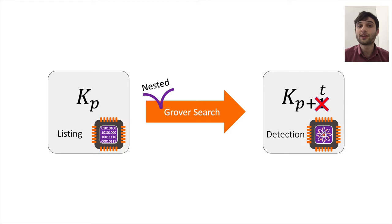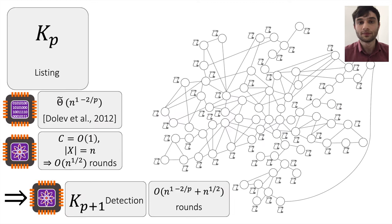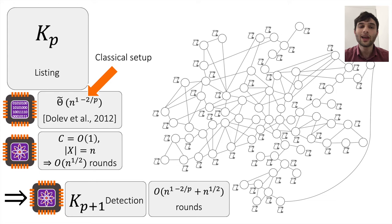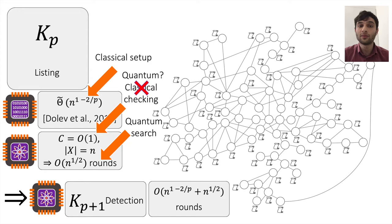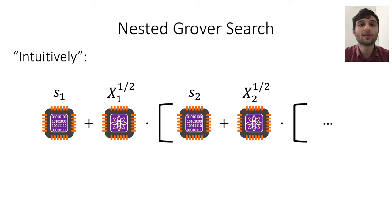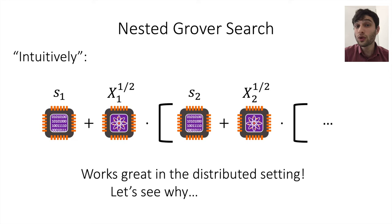How do we use nested Grover searches to extend by t? For example, to take an algorithm for listing cliques of size 4 and produce a detection algorithm for cliques of size 6. Recall we had a classical setup step and a classical checking procedure used in a quantum search. What if instead of the classical checking procedure, we replace it with another Grover search? We get nested Grover search, where we pay some non-quantum setup cost, then search over some domain, and the search itself also has a non-quantum setup cost and another inner search. This works very well in the distributed setting because of the specific property of what we pay for in the distributed model.